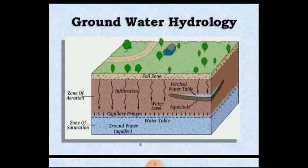Today we will discuss the two zones of the saturated zone. The first is called the zone of aeration, where the air voids are filled with air. Below that is the zone of saturation, where the air voids are filled with water — that is called the zone of saturation.